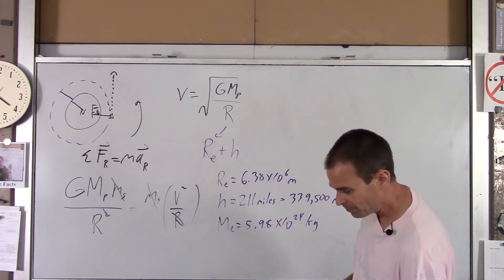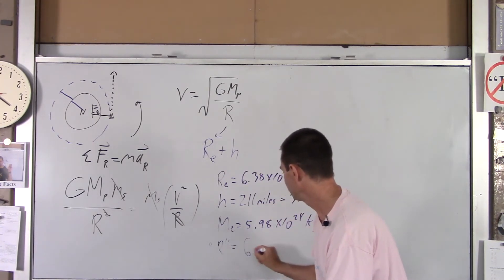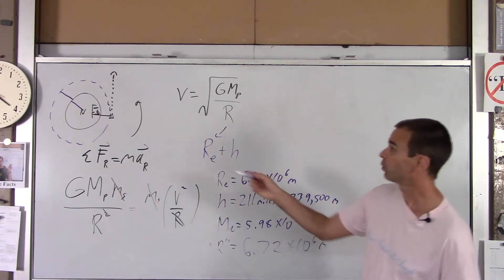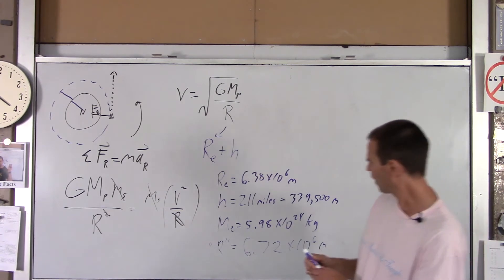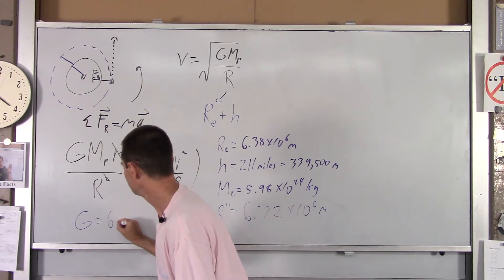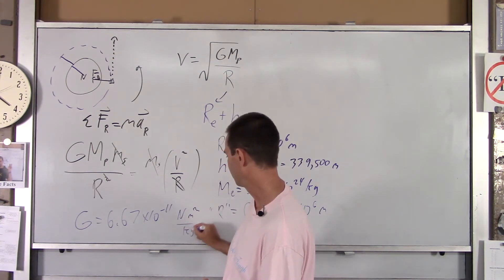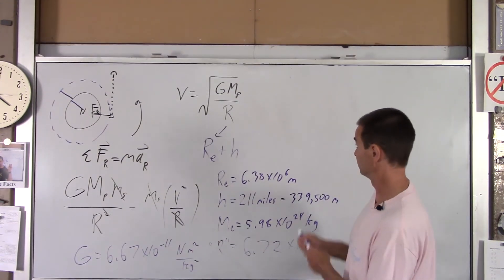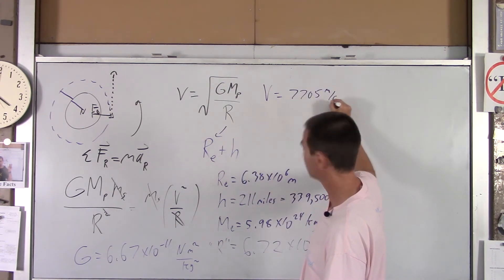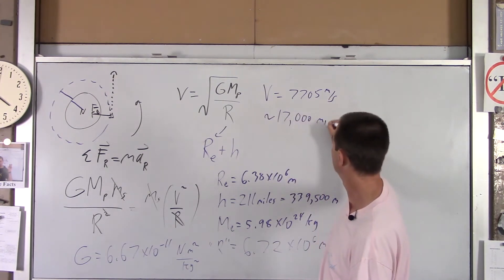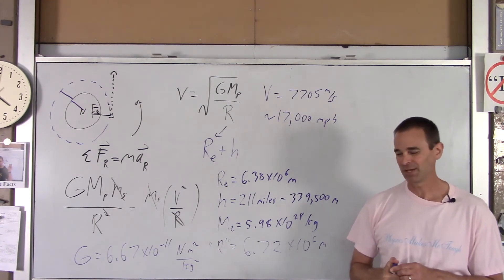You need the mass of the Earth. The mass of the Earth is approximately 5.98 times 10 to the 24th kilograms. If you add these two together, your R that you're going to plug into the equation ends up being 6.72 times 10 to the 6 meters. That's the radius of this purple circle that the ship is making up there. If you plug that in here, and you plug the mass of the Earth in here, and big G is 6.67 times 10 to the negative 11th, if you plug all that stuff in, you get an orbital velocity of about 7705 meters per second, which equates to about 17,000 miles per hour. So right now, those astronauts are booking around the Earth at about 17,000 miles per hour.